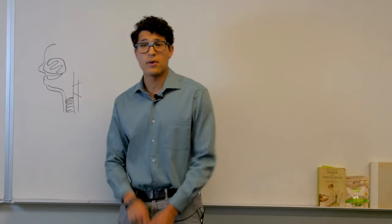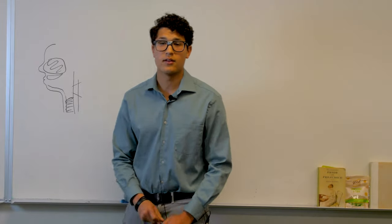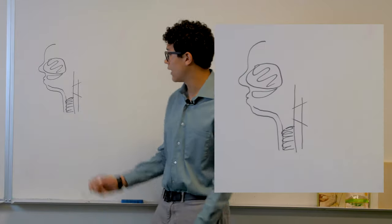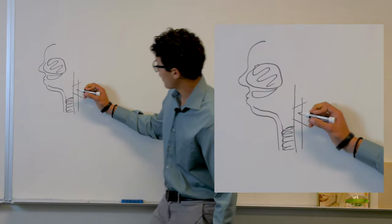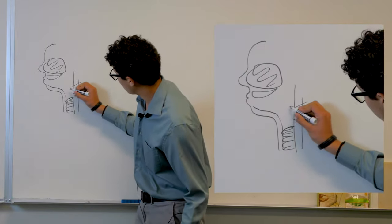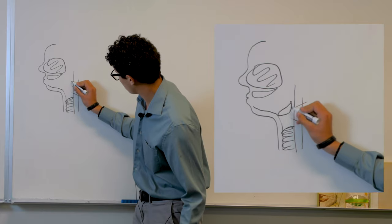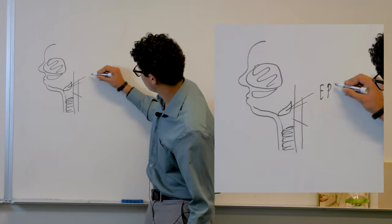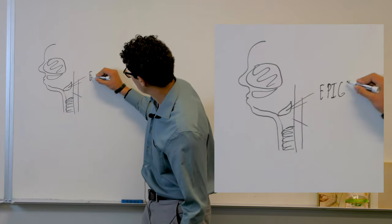This airy bassy sound is created when you breathe out through your epiglottis, located right there — it's kind of like a triangle shape.